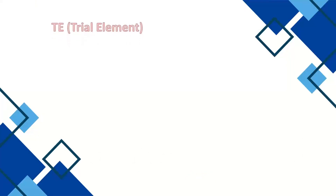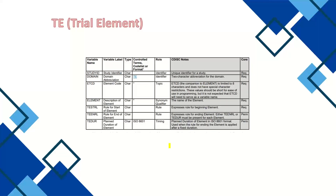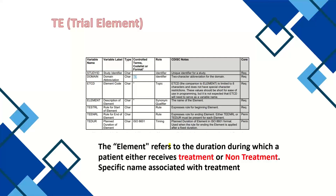Coming to the Trial ELEMENT domain — these are the variables as per the implementation guide. An element is the duration during which a patient either receives a treatment or a non-treatment. For example, Reference and Test are two treatment elements. Screening, follow-up, and washout are non-treatment elements, but they are also elements.